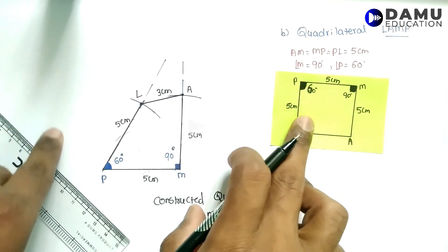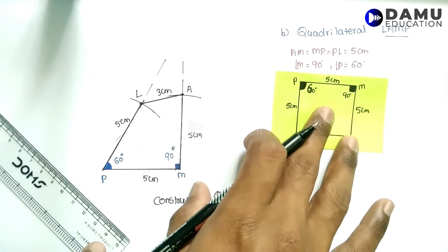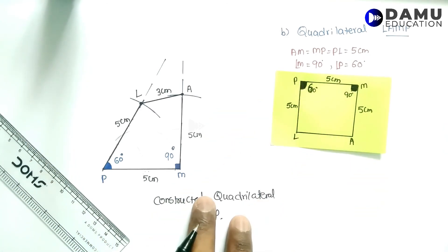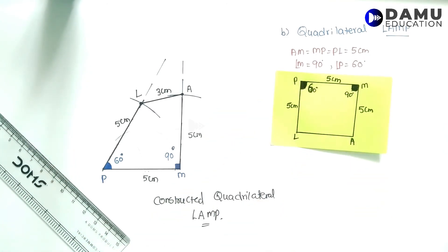We took it in reverse — don't get confused, the rough diagram is reversed. That is how we construct the given quadrilateral. Thanks for watching, please subscribe.